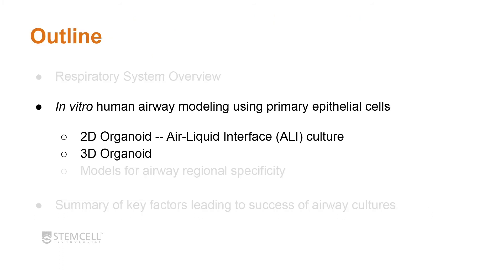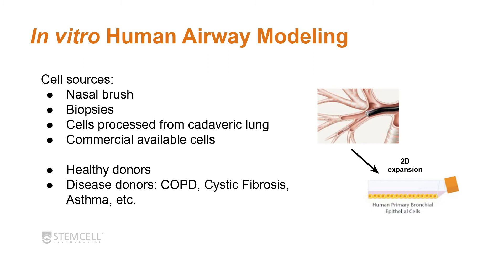Moving on, we'll discuss in vitro human airway modeling using primary epithelial cells in either 2D organoid or air-liquid interface culture, or 3D organoid systems. You can obtain your cells from a variety of sources: nasal brushes, biopsies, cells processed from cadaveric lung, and many of these are available commercially. What's useful is that you can get cells from different donors — either healthy donors or disease donors such as COPD, cystic fibrosis, or asthma patients — allowing comparisons or personalized medicine approaches.